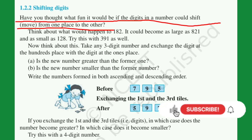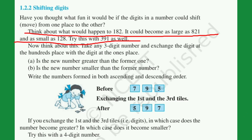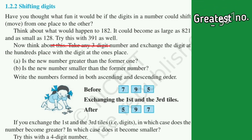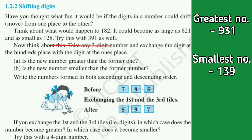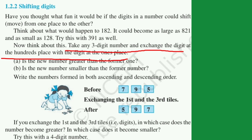Have you ever thought what fun it would be if the digits in a number could shift — that is, move from one place to another? Think about what would happen to 182. It would become as large as 821 and as small as 128. Let's try with the number 391. The greatest number will be 931 and the smallest number will be 139.